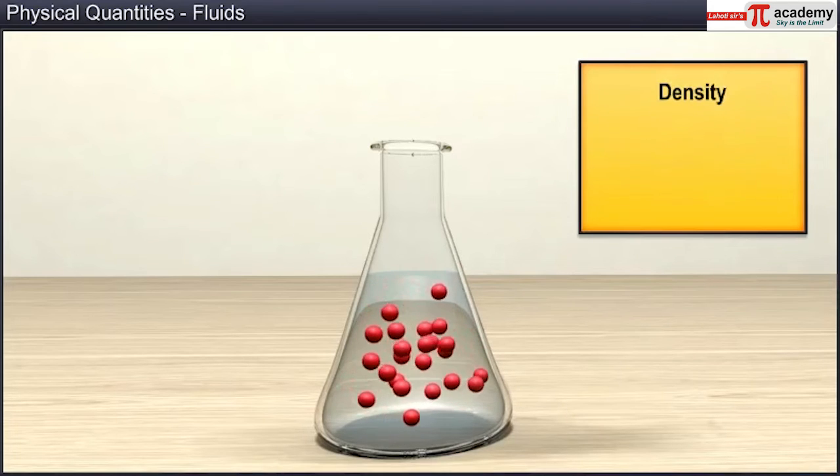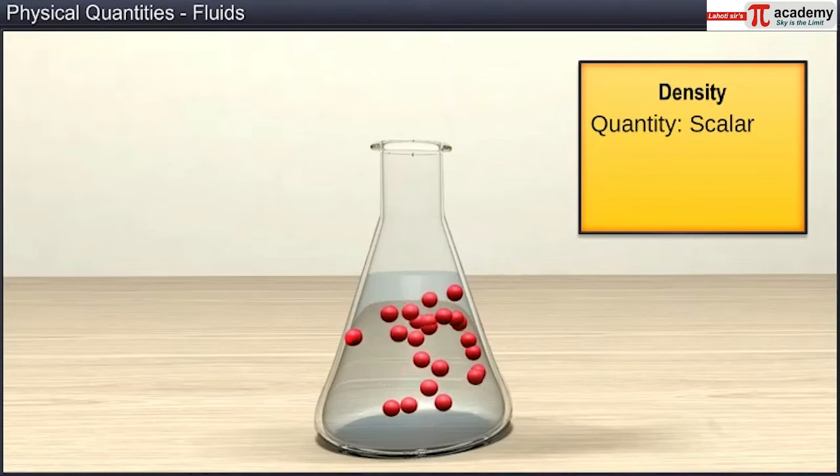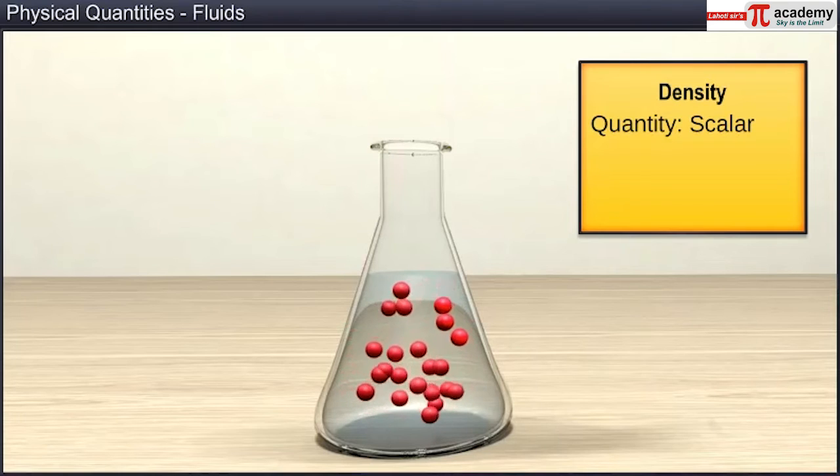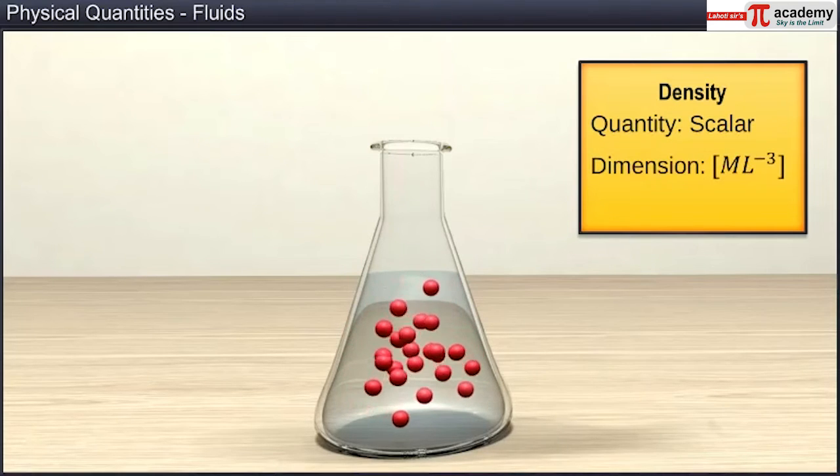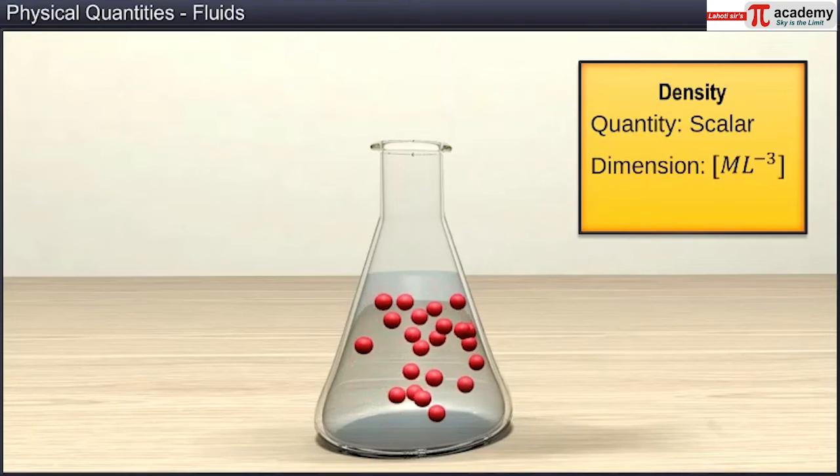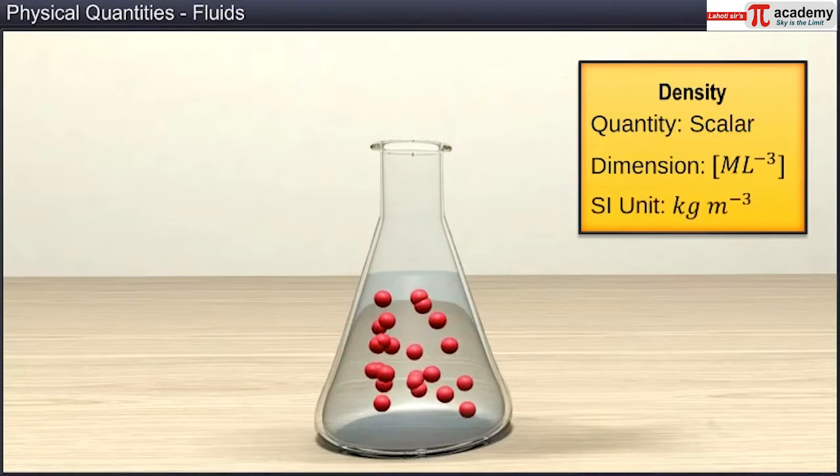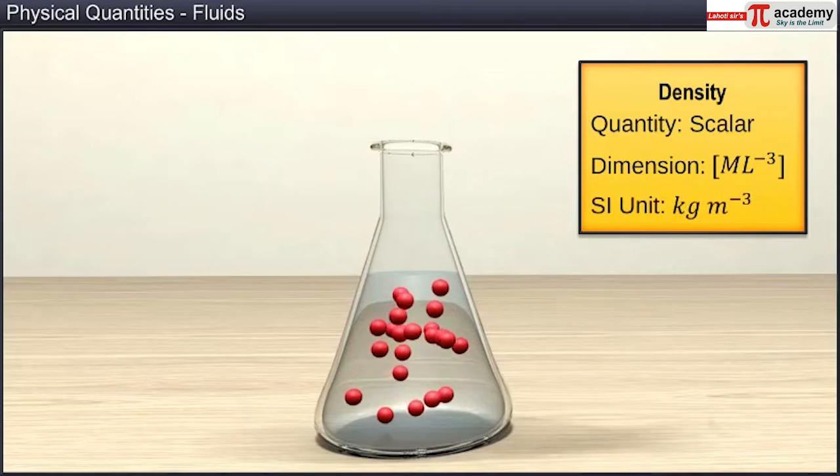As mass and volume both are scalars, density is scalar and its dimensions are M L^-3. In SI system, density is measured in kilograms per cubic meter.